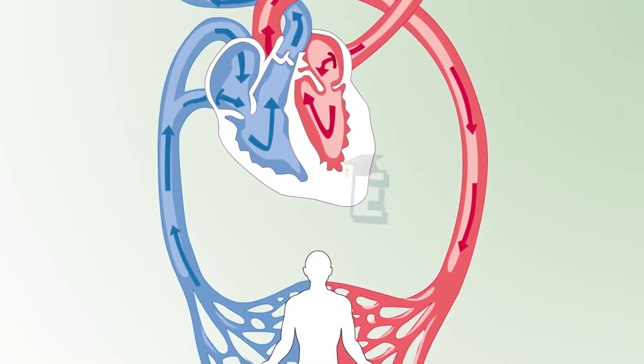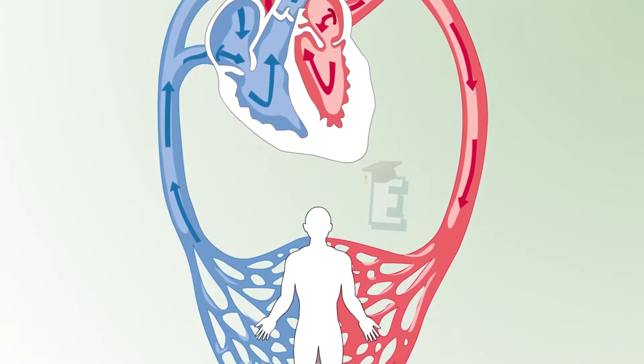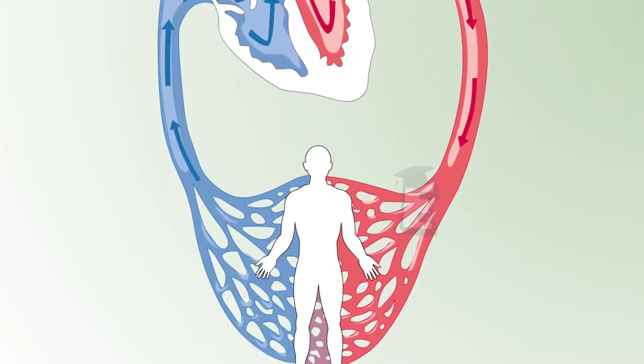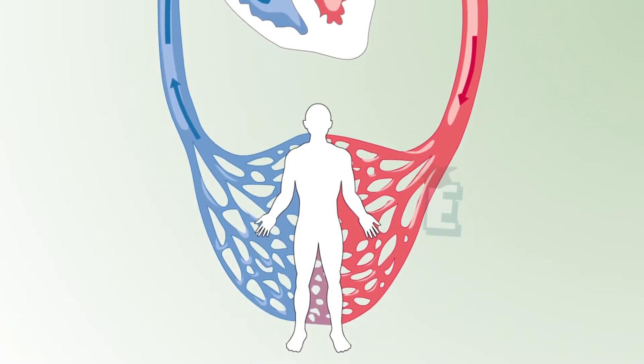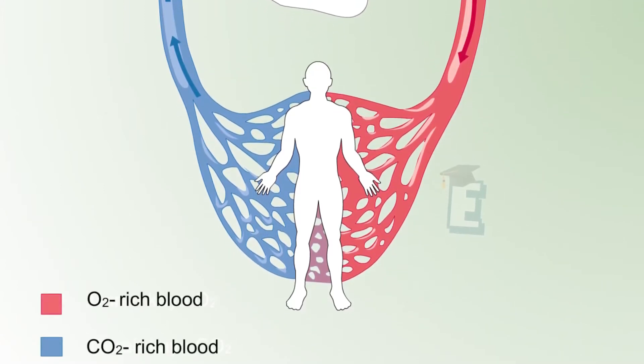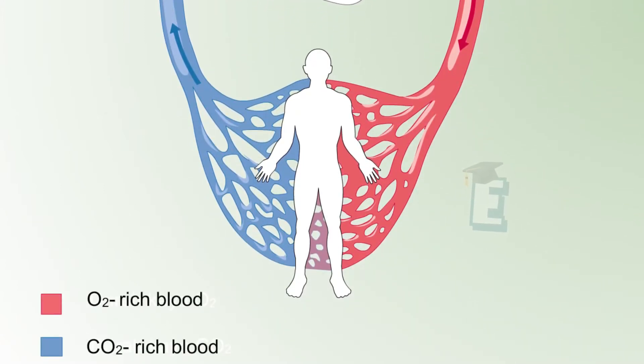The pulmonary circulation is the flow of blood from the heart to the lungs and then back again into the heart. The systemic circulation is the flow of blood from the heart to all parts of the body except for the lungs, and the flow of blood back into the heart.